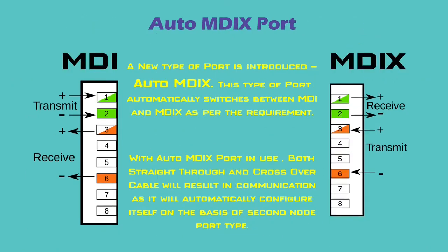Nowadays, a new type of port is in use: Auto MDIX. This type of port can switch over between MDI and MDIX configuration as per the requirement. So, as long as one side is Auto MDIX, it does not matter whether we use a straight-through cable or a crossover cable — it will ensure communication by auto-configuring the port as MDI or MDIX.